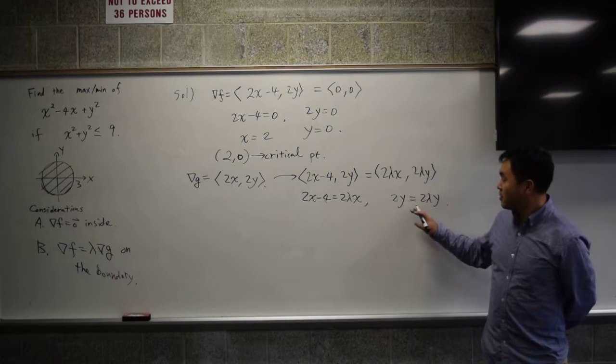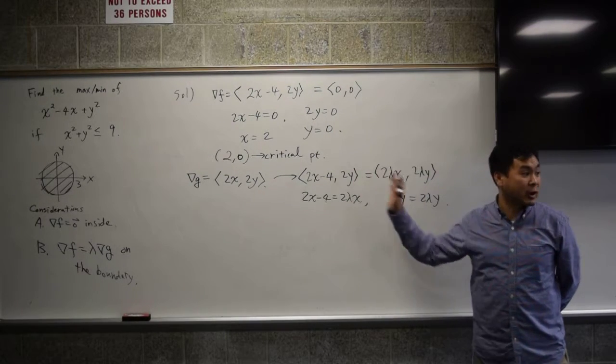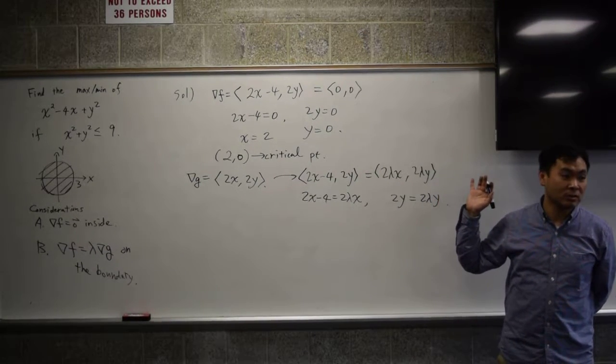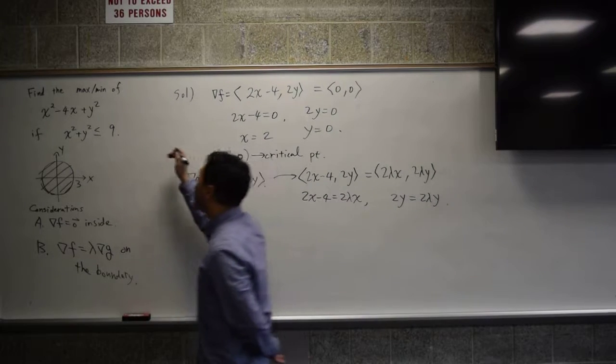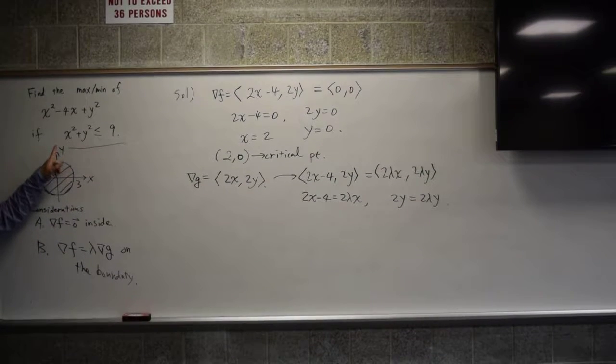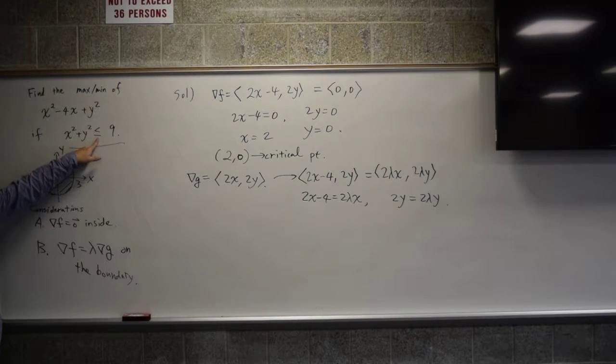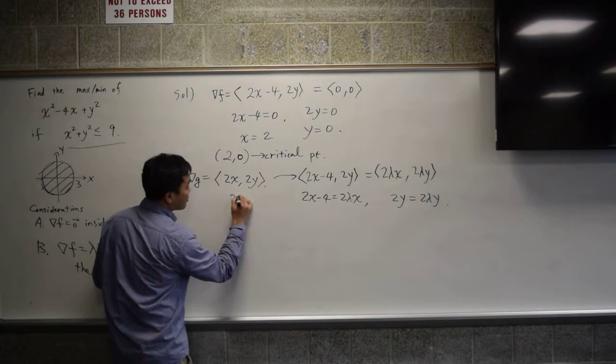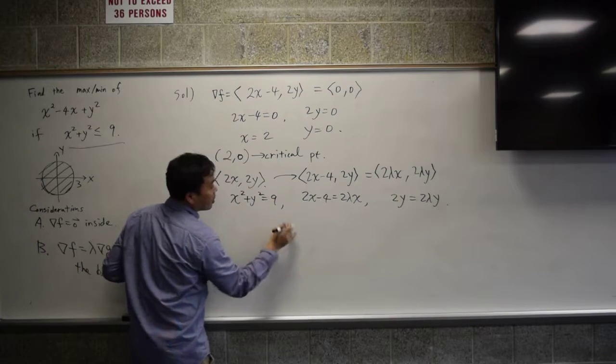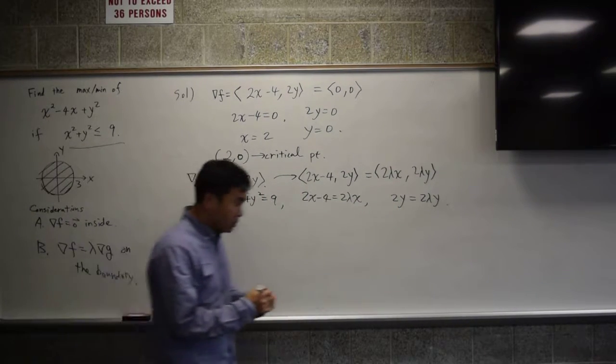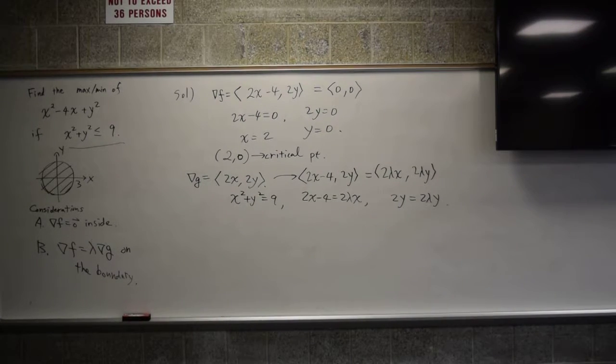Now, these are 3 unknowns with 2 equations, right? What's the third equation? The constraint. When we are doing this, we are on the boundary. This inequality is replaced by equality. So you're really doing x squared plus y squared equal to 9, along with these two equations. So then, it's really 3 equations with 3 unknowns, which means you can solve it.